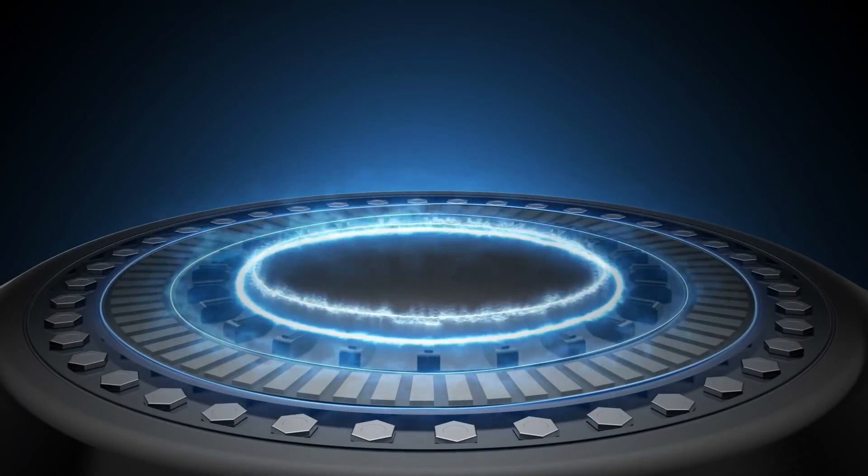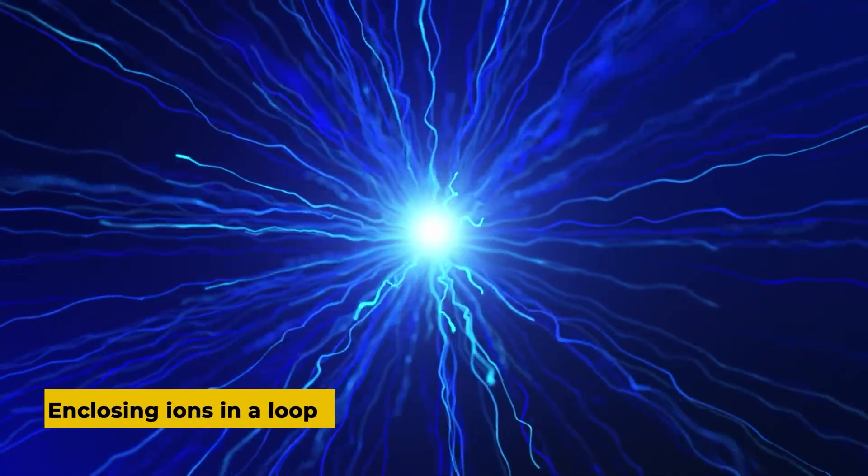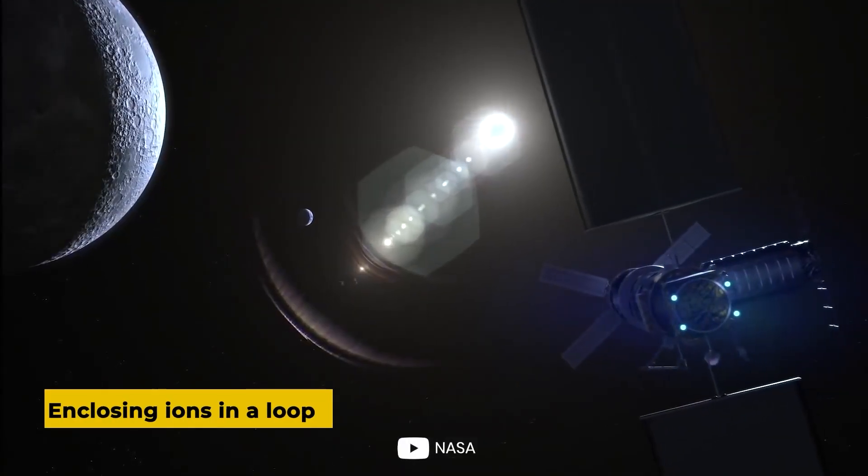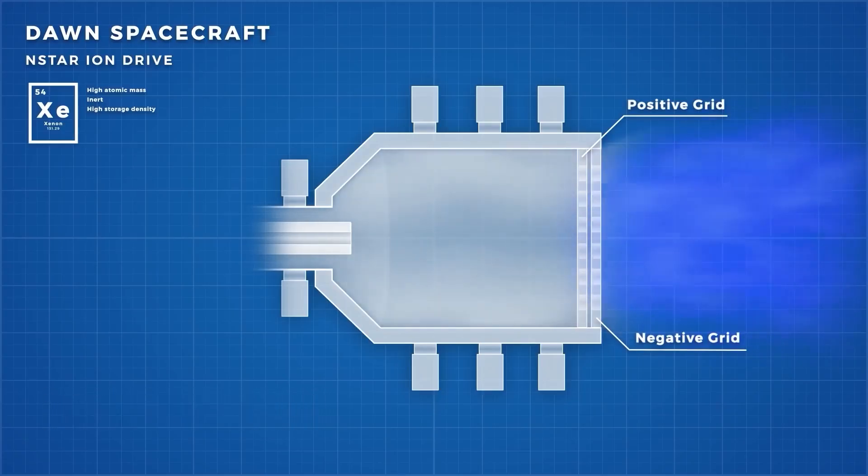Rather, it is designed to work by enclosing ions in a loop, getting them up to moderate speeds, then changing their velocities enough to change the masses of the ions.